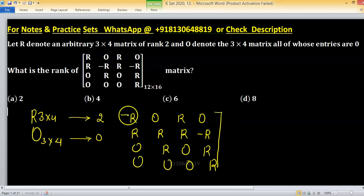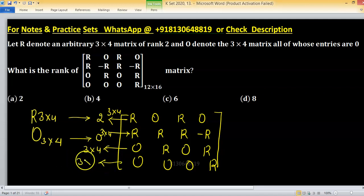Size of R is 3 cross 4, size of the second R is 3 cross 4, size of R in the third row is also 3 cross 4 and same in the fourth. So total rows will be 12 and total columns will be 16. Size of this matrix 12 cross 16 is perfect.